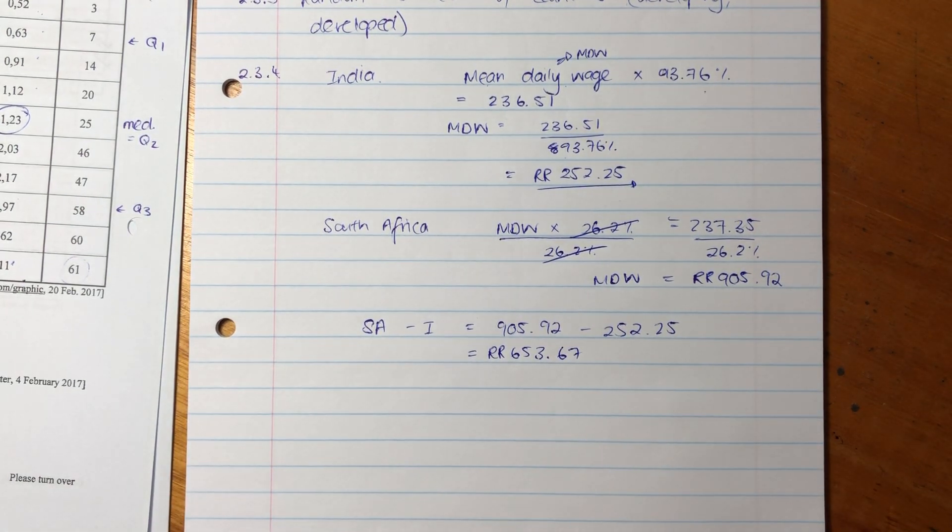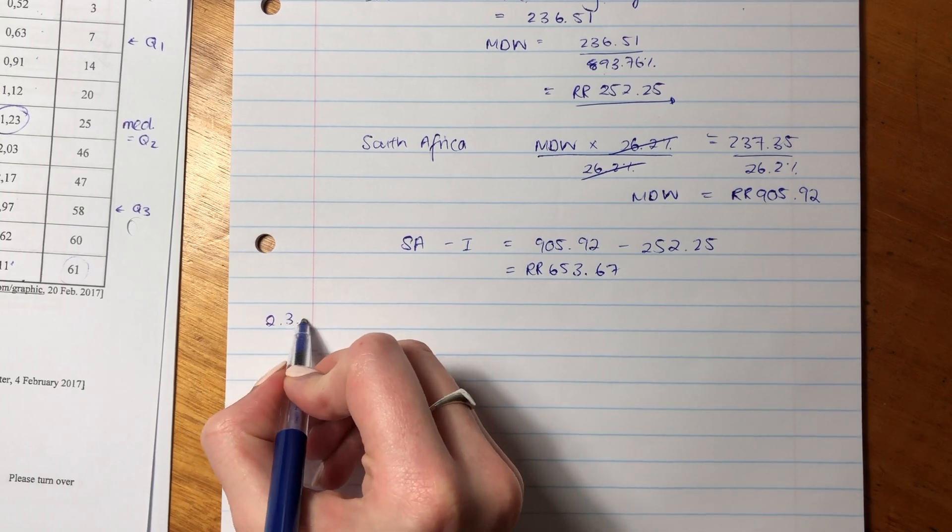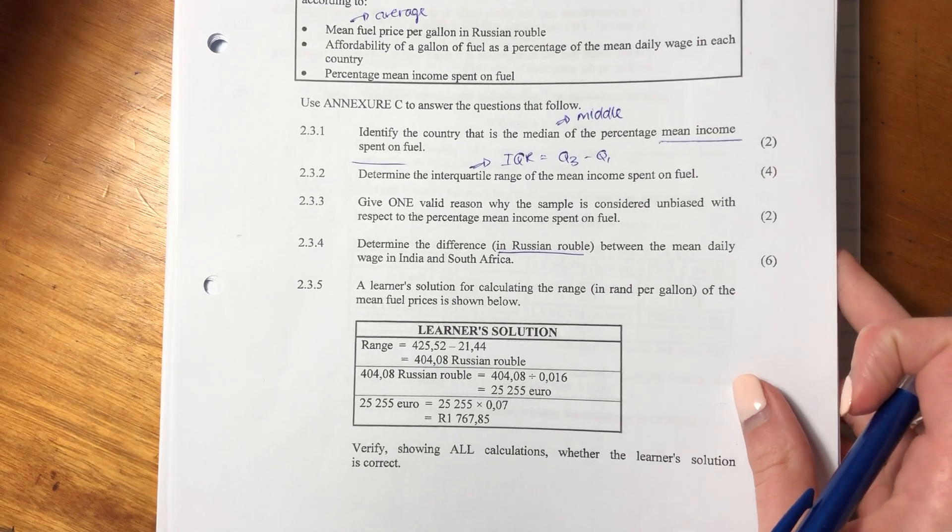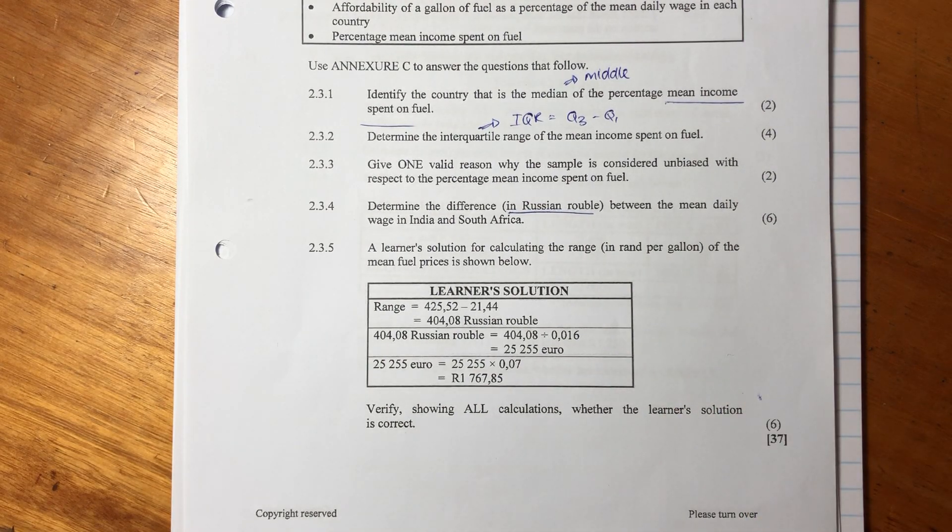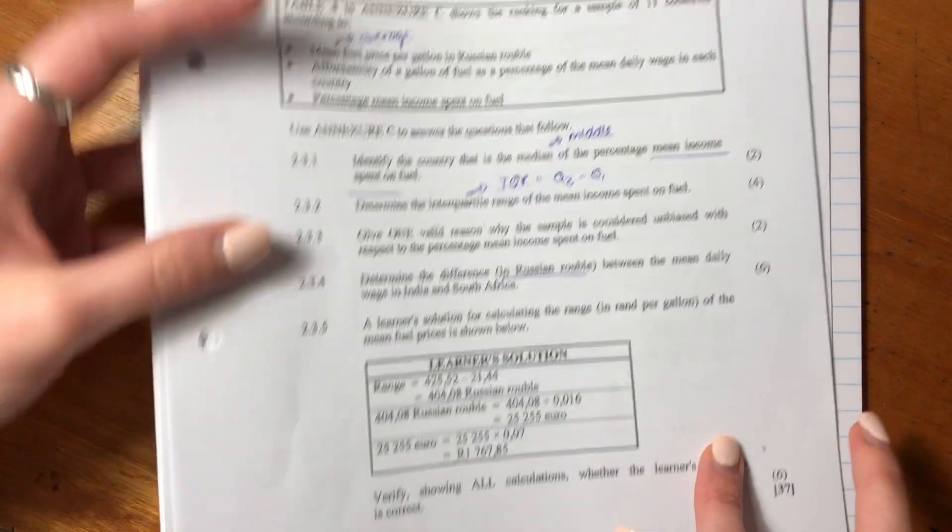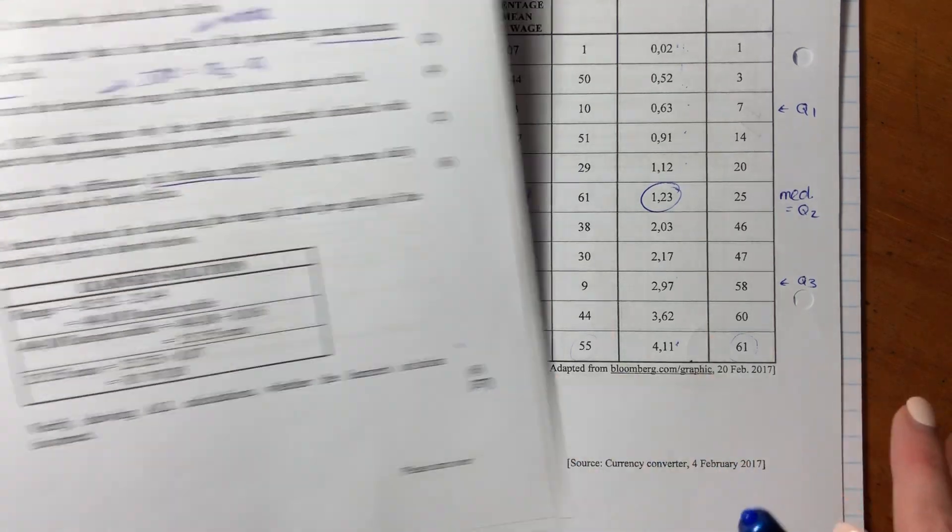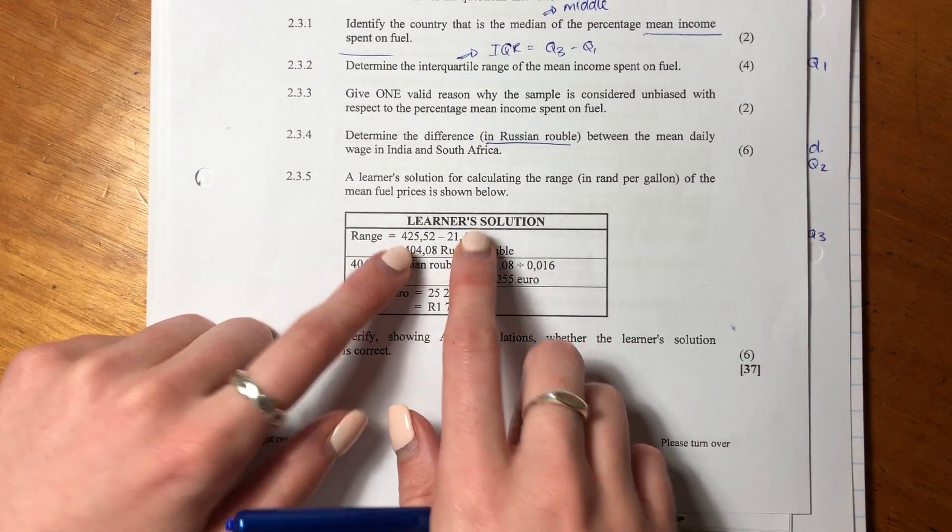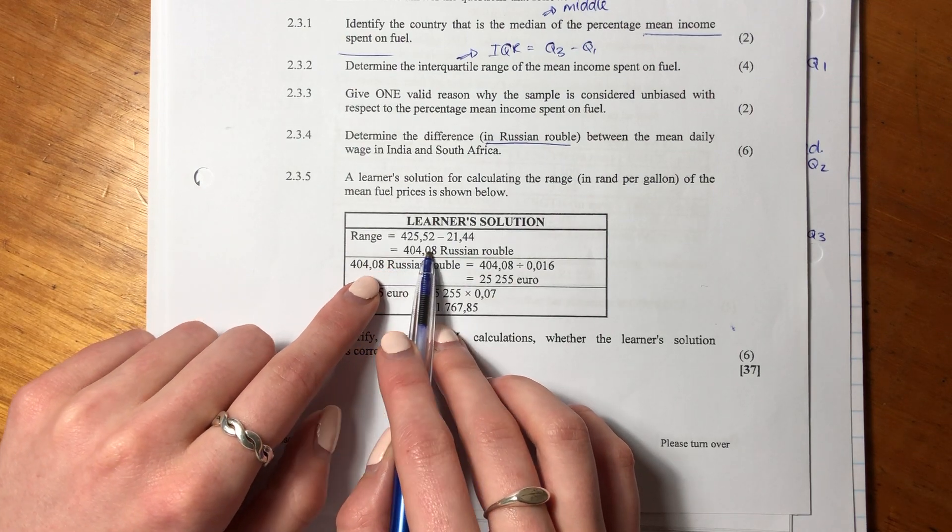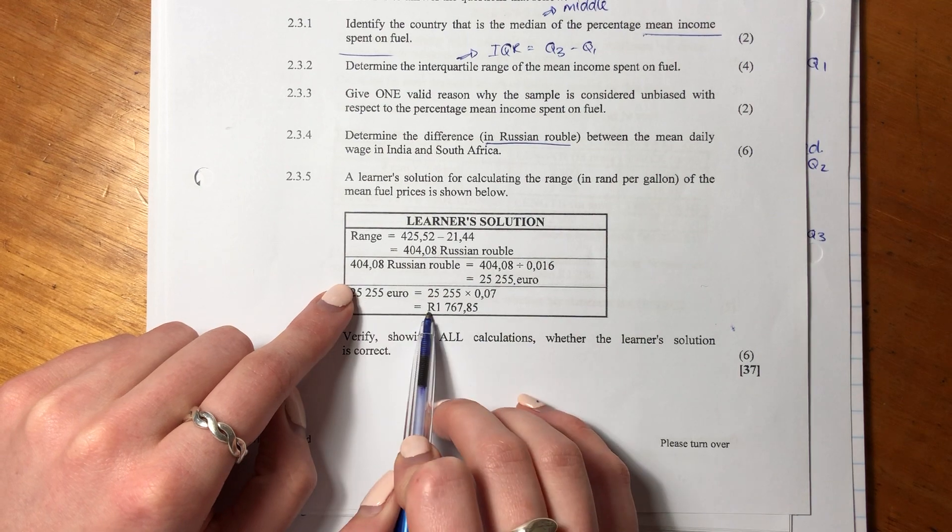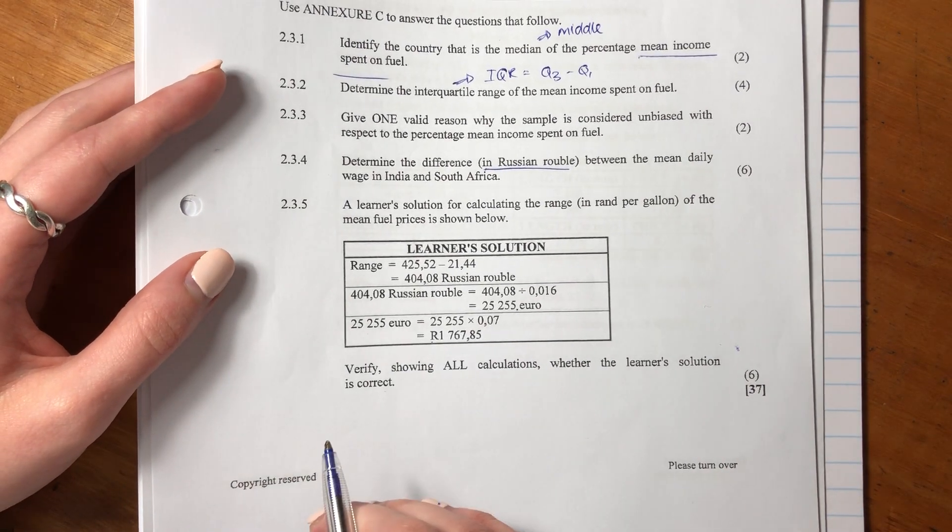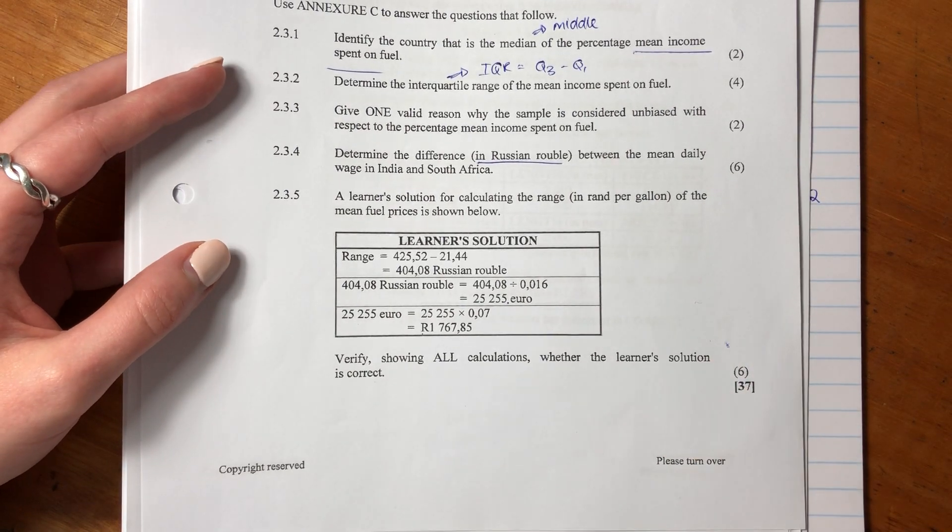So that is the answer there. It's a little bit tricky, but it's one of those things that try reason out what information has been given. Let's now go to the last question of this question. Again, a big question, but not impossible. So it says a learner's solution for calculating the range in RAND per gallon of the mean fuel price. The mean fuel price. So it's important, we're sitting here. This is the mean fuel price. It's shown below. So they said the range, they basically said the biggest minus the smallest, is this many Russian ruble. Then they say let's convert that into euro, and then let's convert that euro to RAND. So let's do this calculation and see whether we get the same answer. And remember, at the end of this, we have to either say the student is correct or incorrect. You can't just do the calculations and call it a day. You have to comment on it.